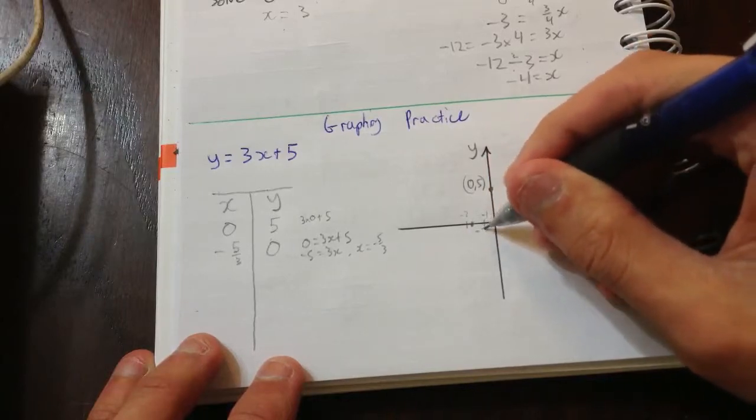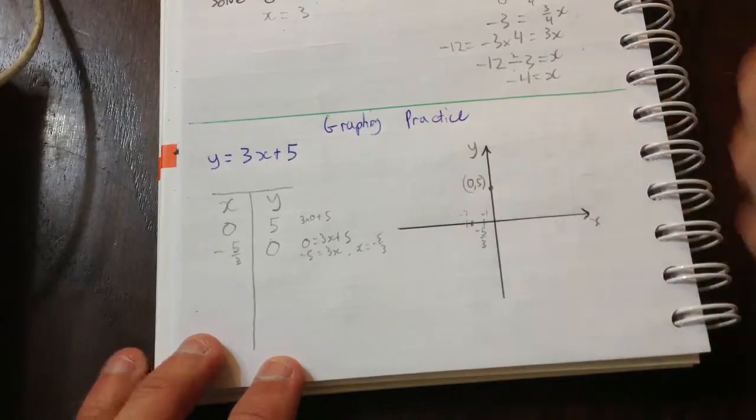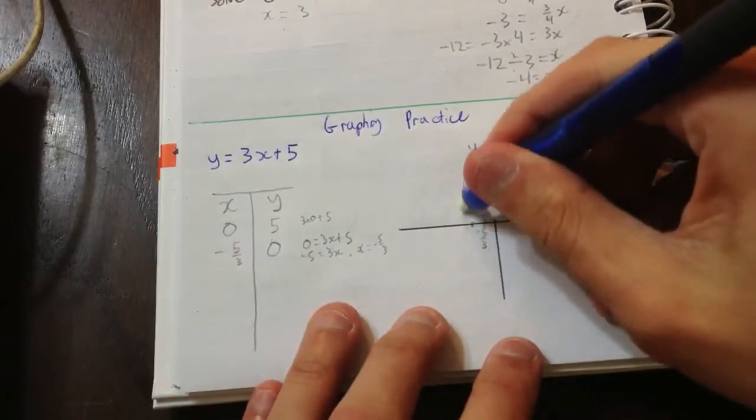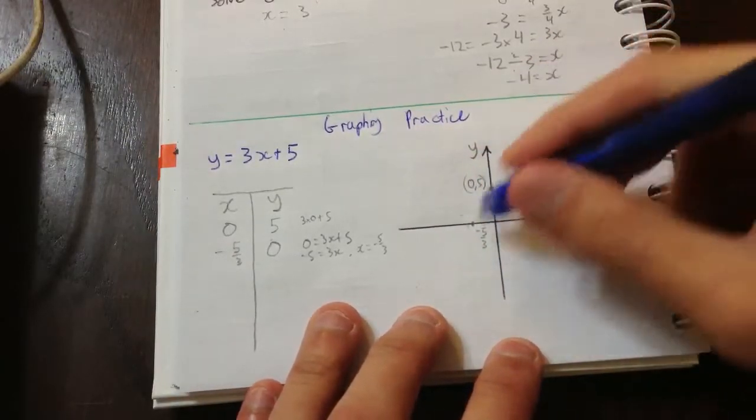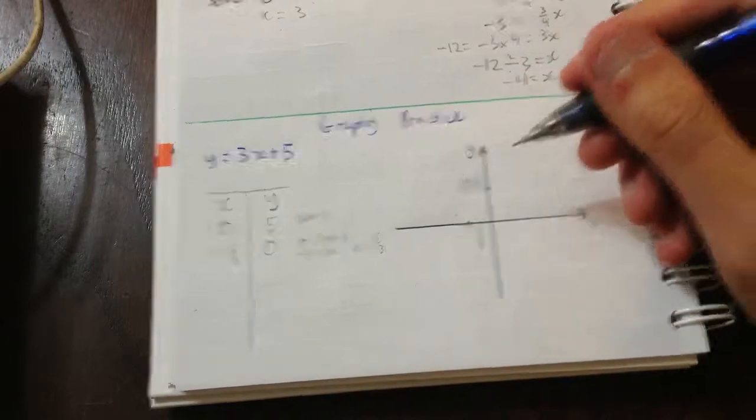Okay? Minus 5 on 3. So we don't need to label these anyway, because the scale should be understood based on your points.